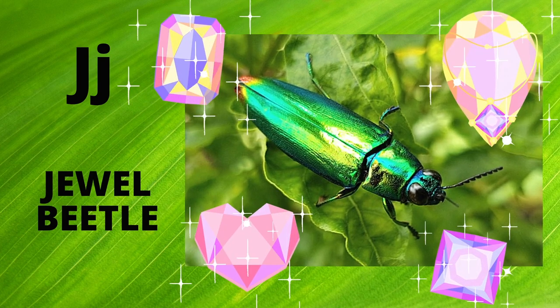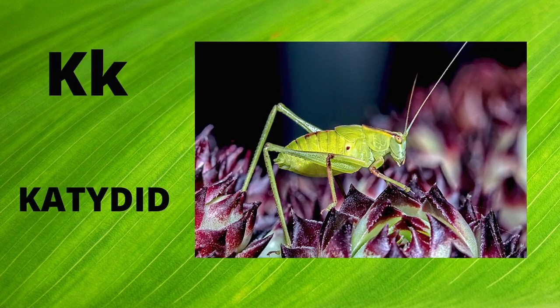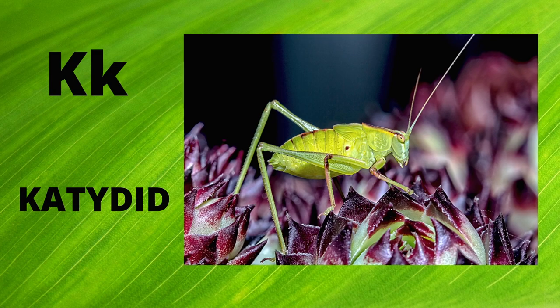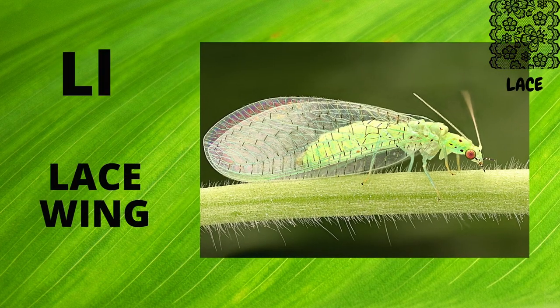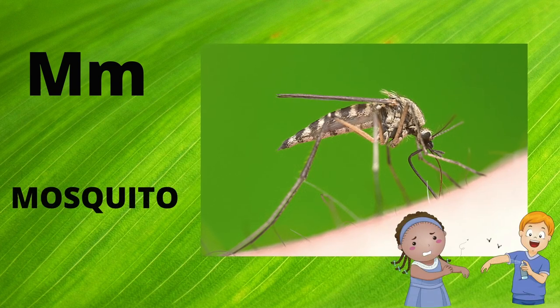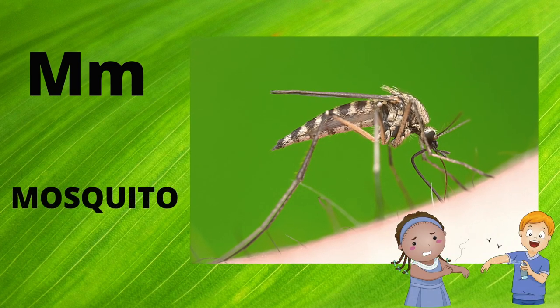K is for Catanid. K. Catanid. L is for Lacewing. L. Lacewing. M is for Mosquito. M. Mosquito.